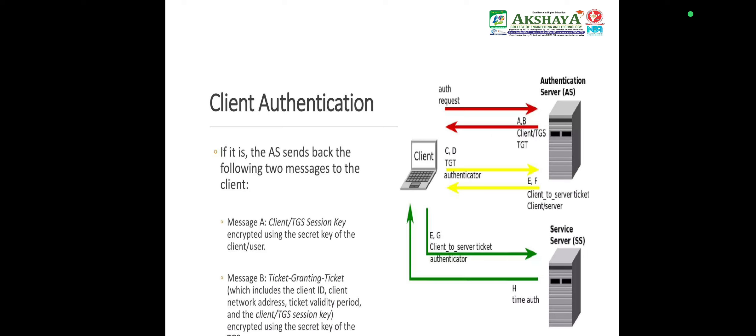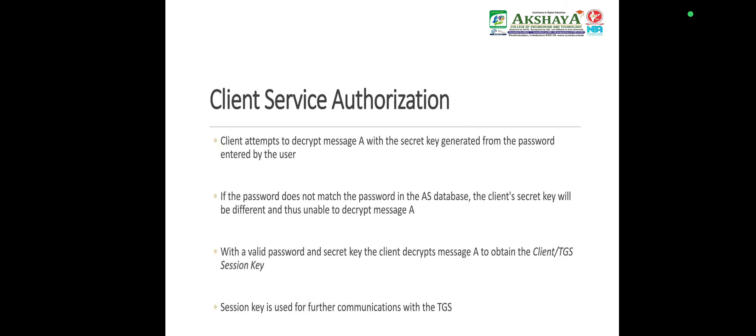client network address, ticket validity period, and the Client-TGS session key, all encrypted using the secret key of the TGS. The client attempts to decrypt message A with the secret key generated from the entered password. If the password does not match the AS database, the client secret key will be different and thus unable to decrypt message A. With a valid password and secret key, the client decrypts message A to obtain the Client-TGS session key, which is used for further communication with the TGS.